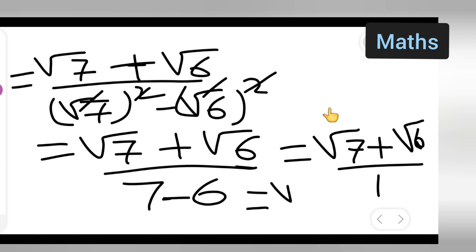So finally you are going to write root 7 plus root 6 as your answer. I hope you all have understood how to solve this rationalizing problem. Thanks for watching.